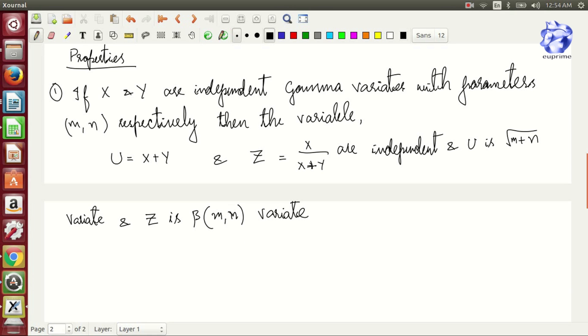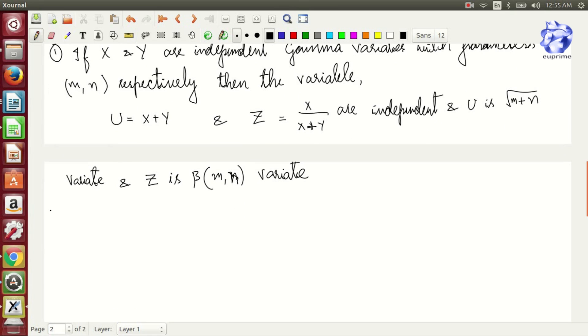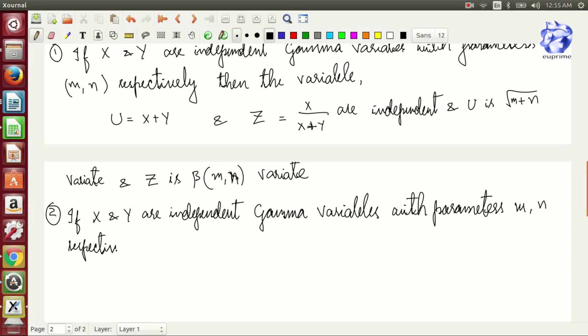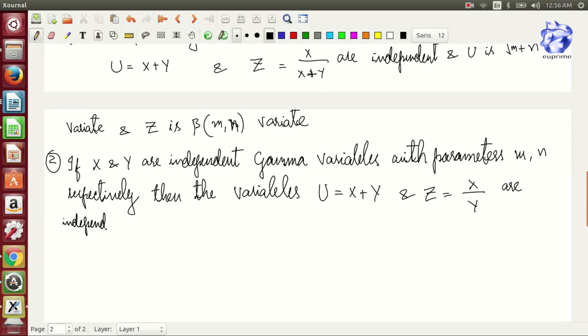Second property: if X and Y are independent gamma variables with parameters m and n respectively, then the variables U defined as X+Y and Z as X/Y are independent, and U is gamma(m+1) variate and Z is beta(m,n) variate.